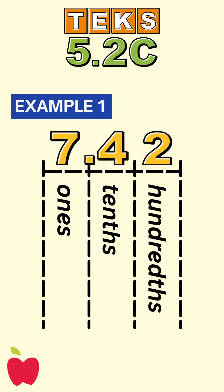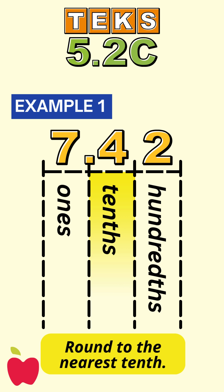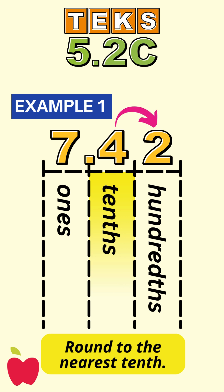Now let's look at the number seven and forty-two hundredths. We are going to round to the nearest tenth. First, find the tenths place — that's the four. Now look at the next digit to the right, which is two. Since two is less than five, we keep the four the same, so seven and forty-two hundredths rounded to the nearest tenth is seven and four tenths.